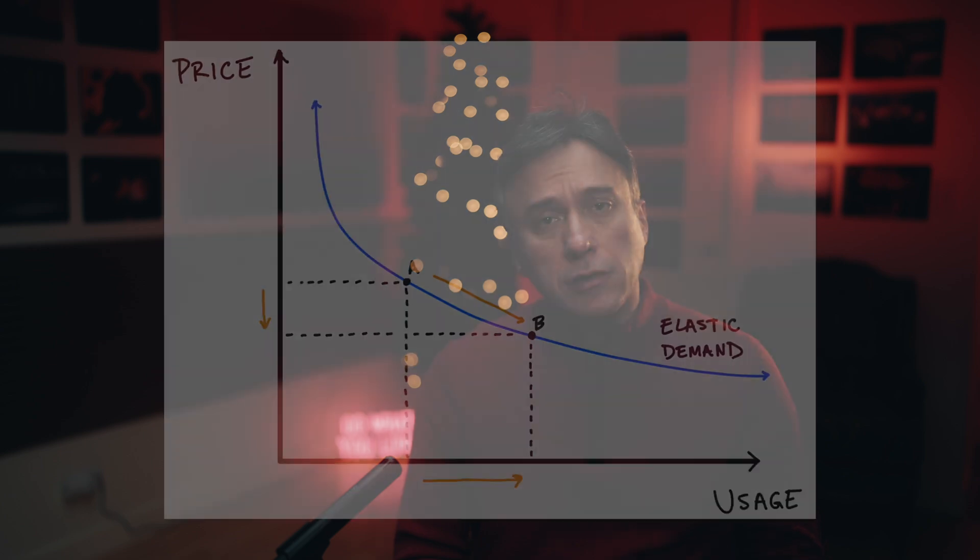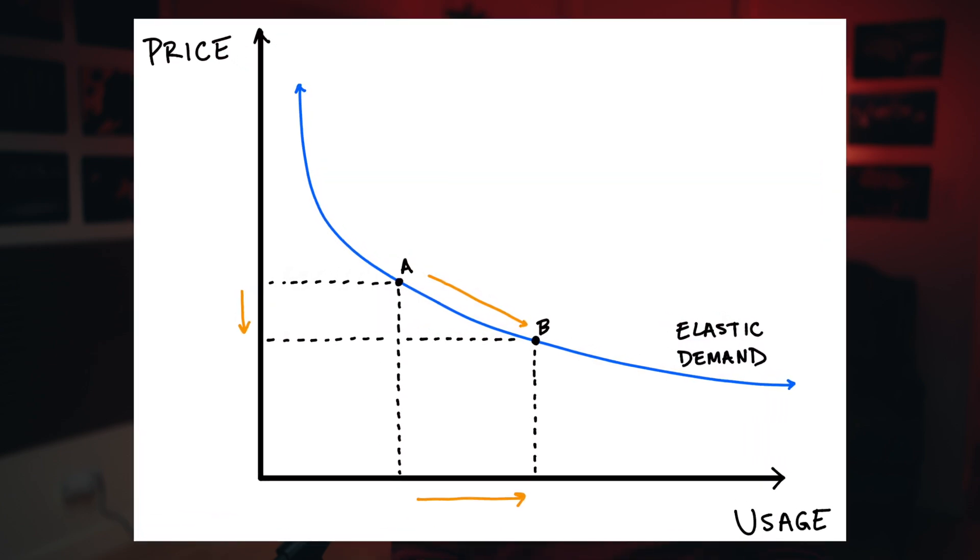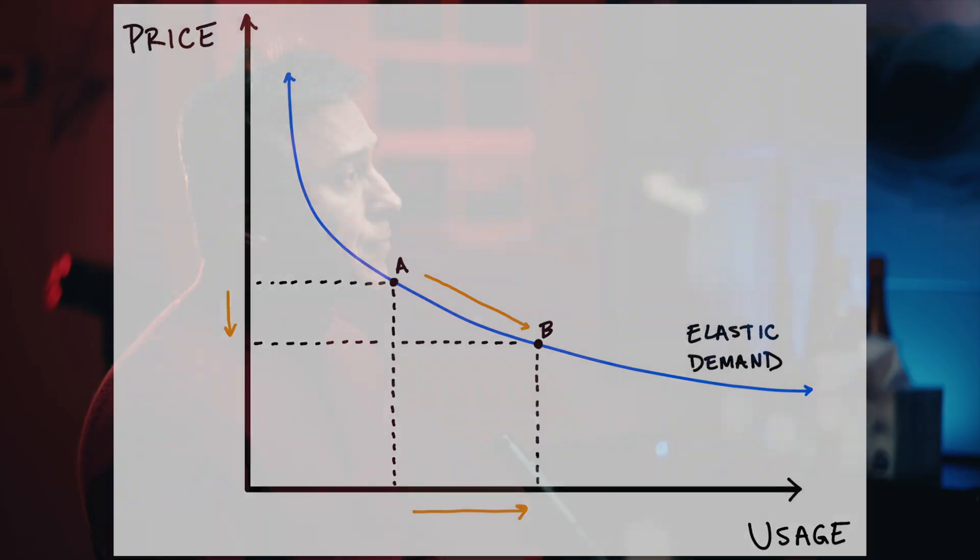Jevons paradox tells us that when the cost of something drops, its consumption can actually increase. This is rooted in a basic economic principle of supply and demand. As prices decrease, more people can afford the product, leading to higher demand.